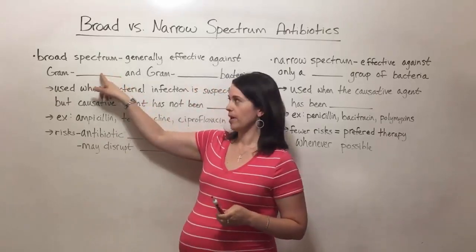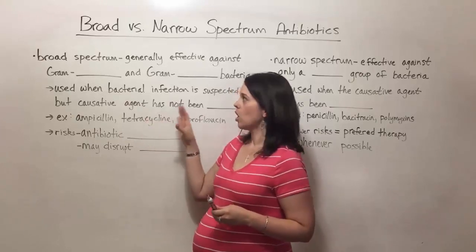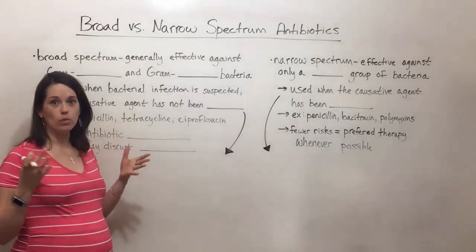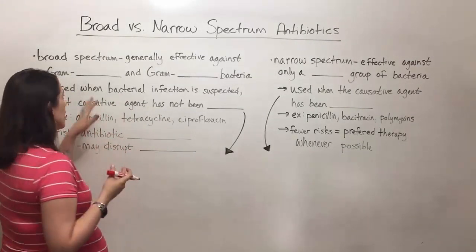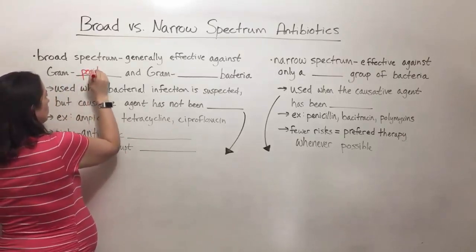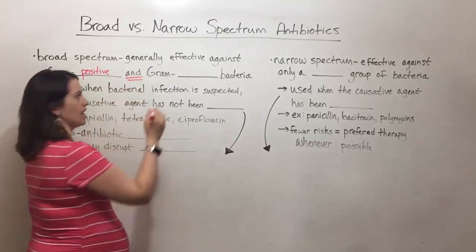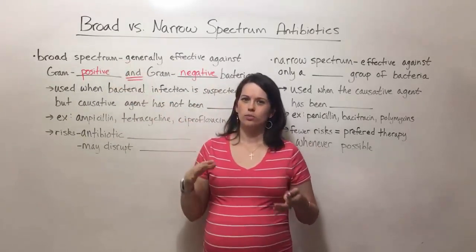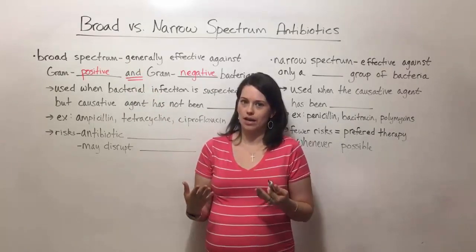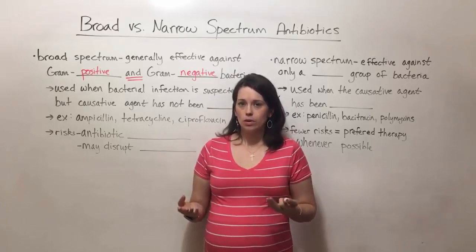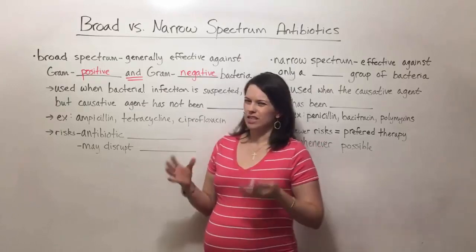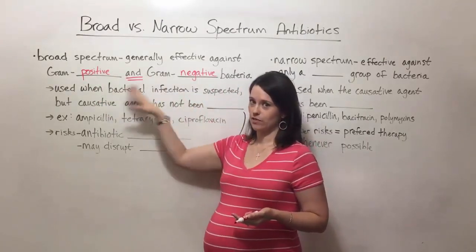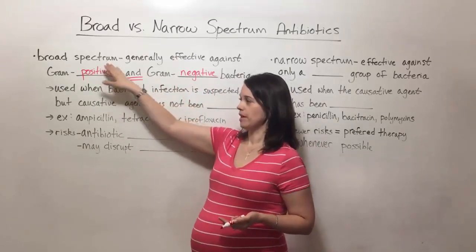Antibiotics are classified as broad-spectrum if they are generally effective against a really wide range of bacteria, particularly gram-positive and gram-negative bacteria. Sometimes the term is used more subjectively to refer to an antibiotic broadly applicable against a wide variety of pathogens, but more often it requires effectiveness against both gram-positive and gram-negative bacteria.